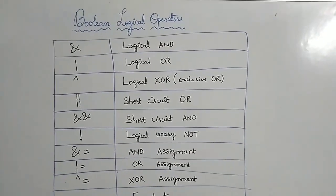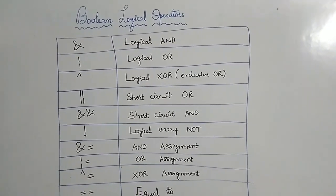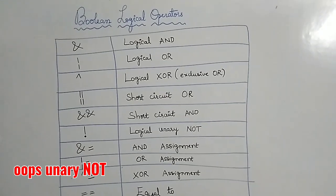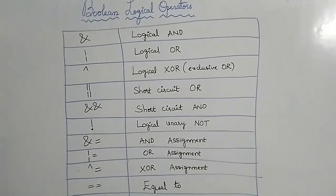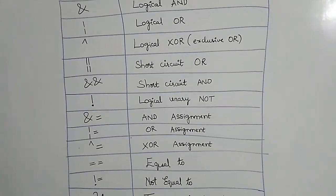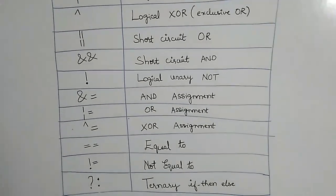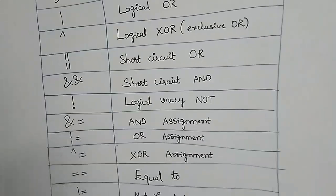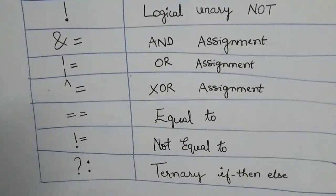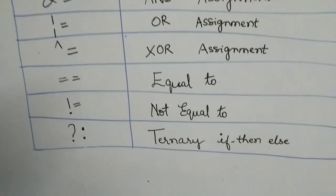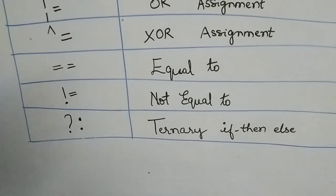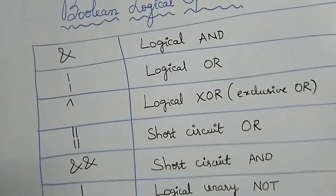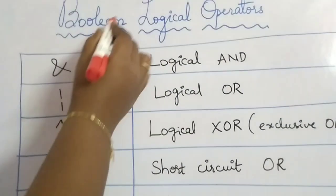Hello friends, welcome back. Today we will see Boolean logical operators: logical AND, logical OR, logical XOR (exclusive OR), short circuit OR, short circuit AND, logical binary NOT, and assignment OR, assignment AND, assignment XOR, assignment equal to, not equal to, and ternary if-then-else. These Boolean logical operators will be applied only on booleans.